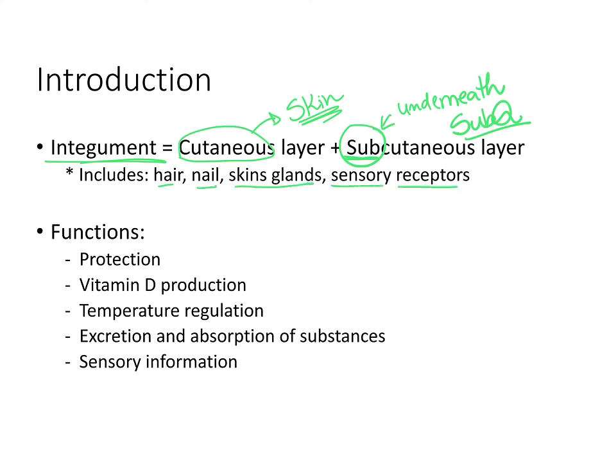One thing I find very interesting is that our skin is the largest organ of the human body, and it is often the most underrated. The skin is our first line of defense against external environment conditions, and it has a very important role protecting all the other organs within our body. The skin also protects us from becoming dehydrated, because it prevents us from losing water to the external environment.